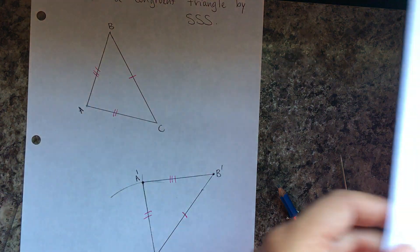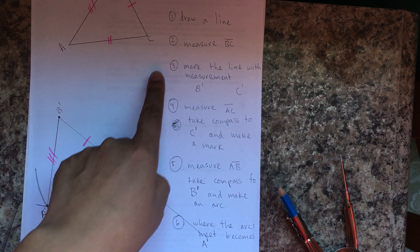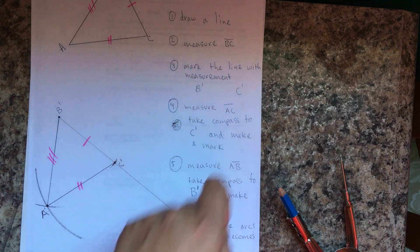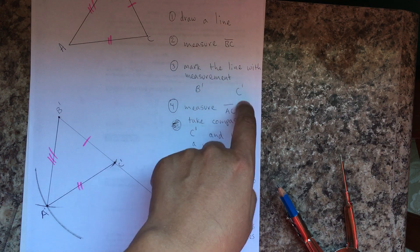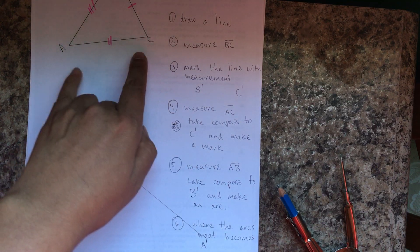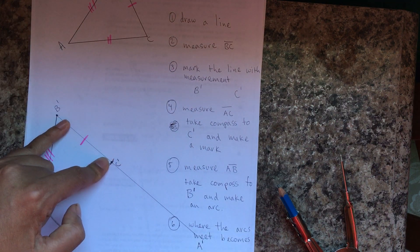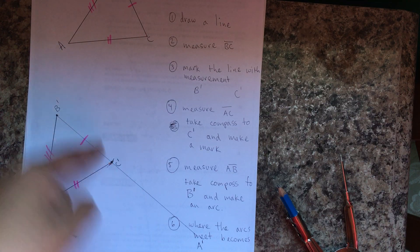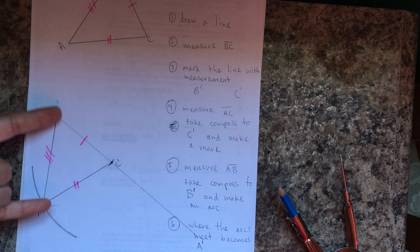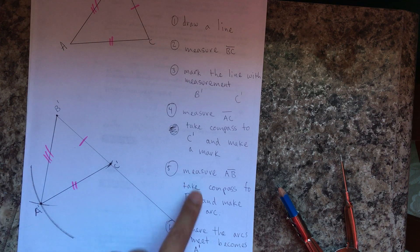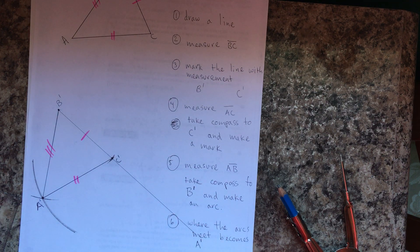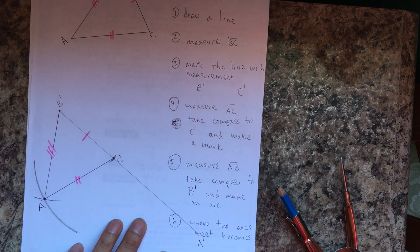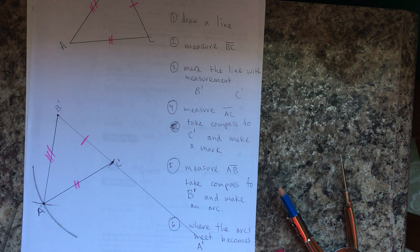Here are the steps in students' own words: draw a line; measure BC and mark the line with B prime and C prime; measure AC and from C prime make an arc; measure the third side and from B prime mark the other arc; where the arcs meet becomes A prime; then connect the dots. Go ahead and pause the video to take these notes.